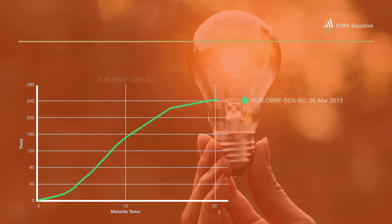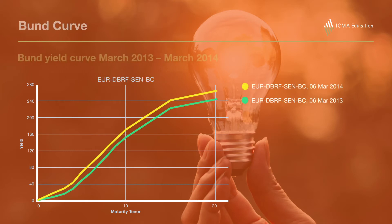We have some examples that we use, and this is an example we build up to in order to illustrate some particular points. This example is around fixed income investing when you're expecting yields to rise. My example is based on the German government bond curve, or the Bund curve, and I spend a lot of time searching for an example where over a year the yields go up roughly in parallel.